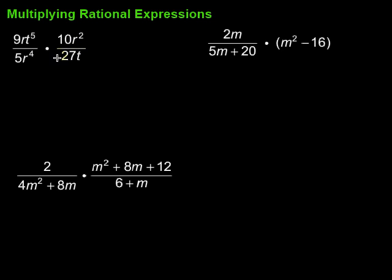Remember when we're multiplying fractions we just multiply straight across, top and bottom, numerator and denominator. We can simplify before we multiply or after we multiply. Let's start with this first one here. We've got 9rt^5 over 5r^4 times 10r^2 over 27t.